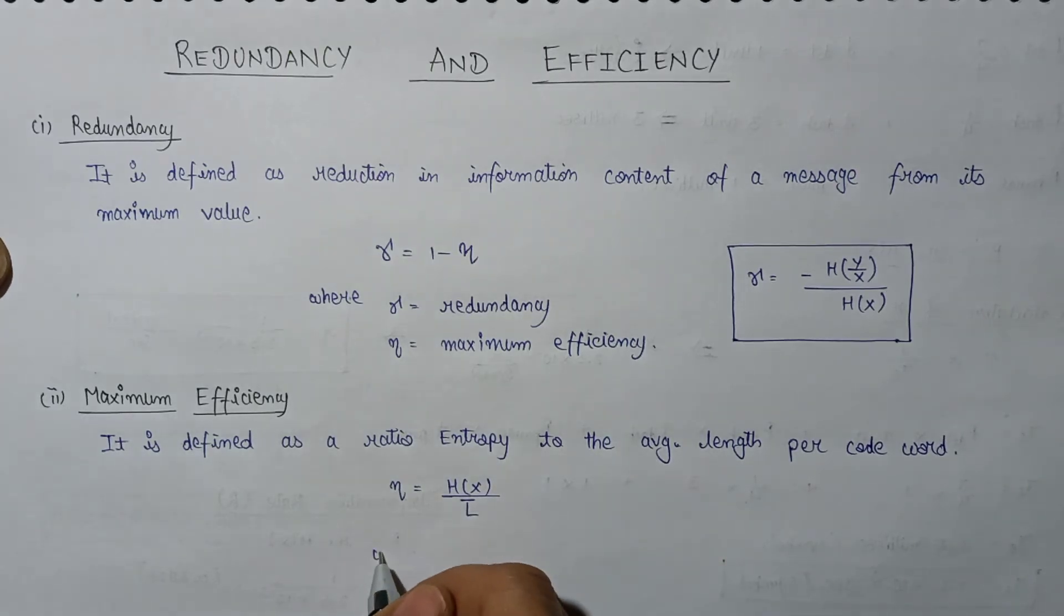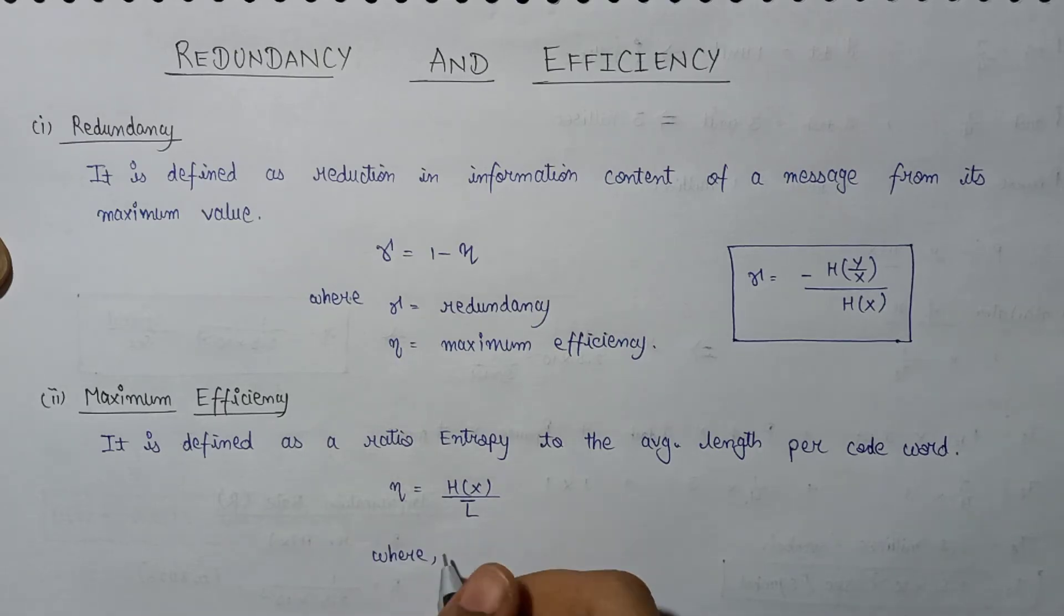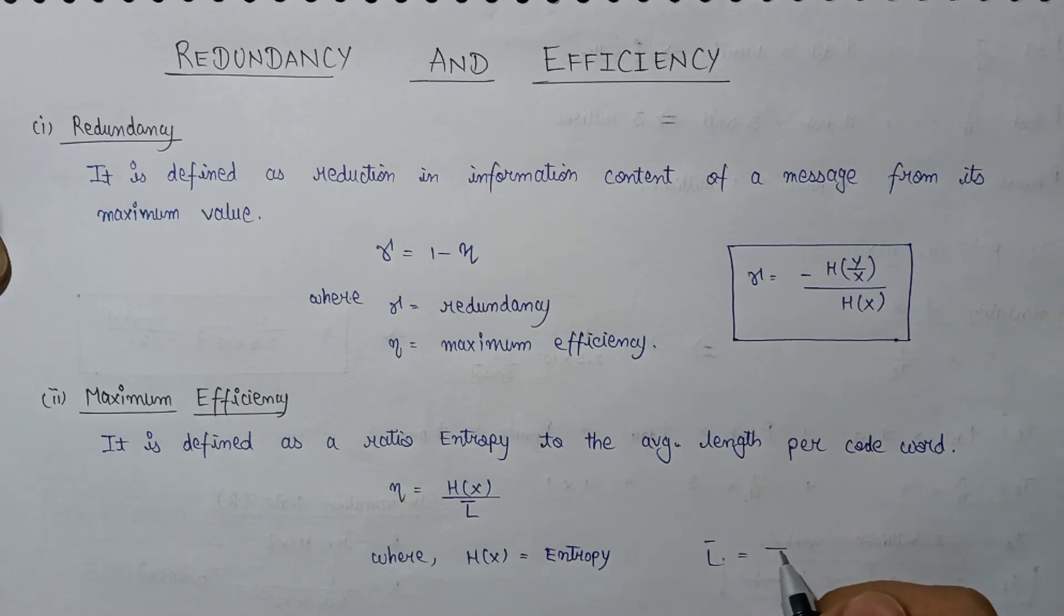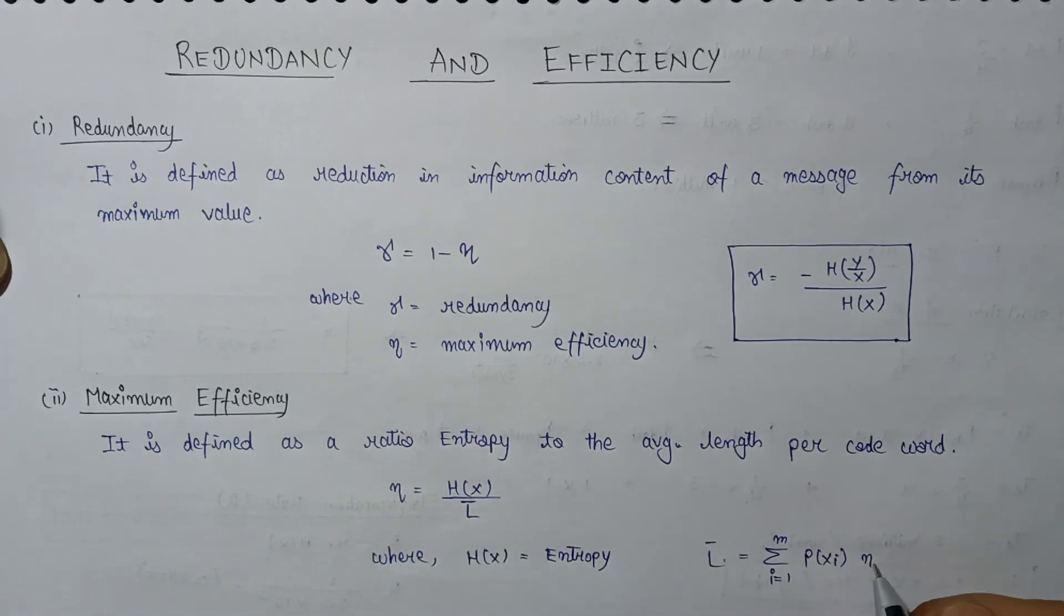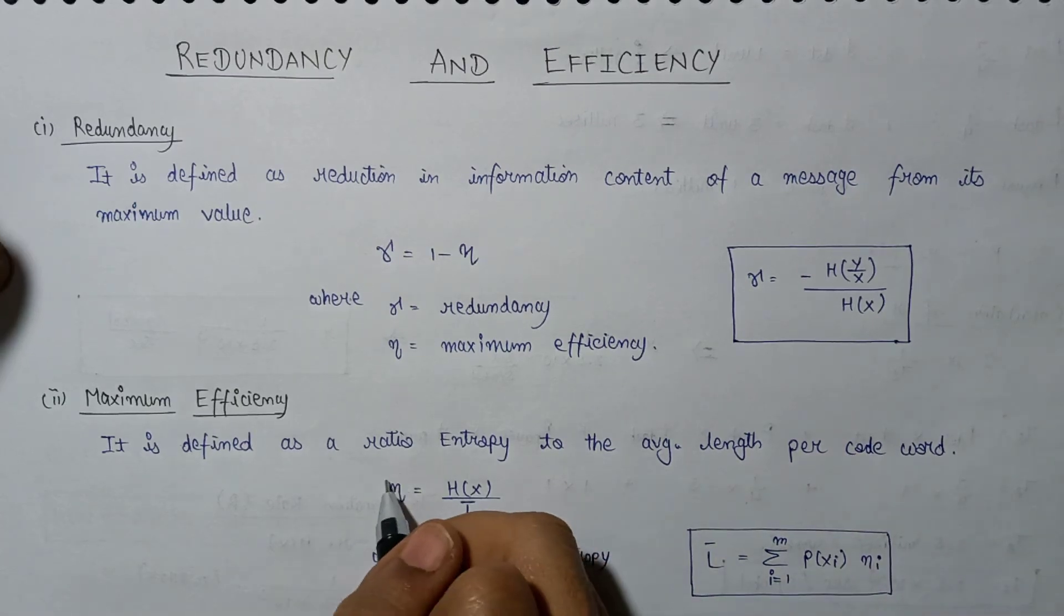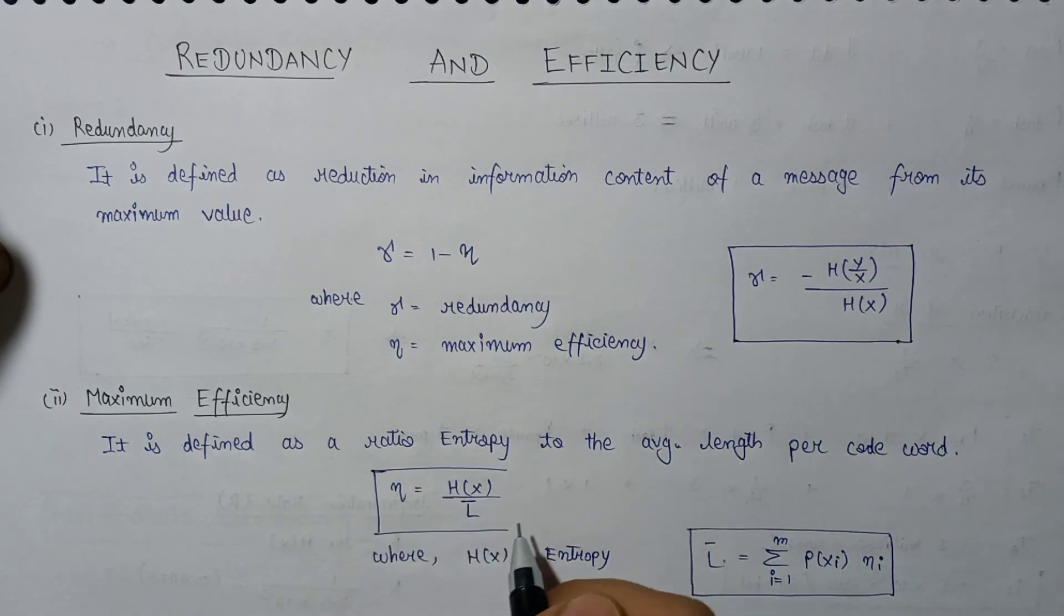Here H of X represents the entropy, the average information. And L bar is the summation, i ranges from one to M, P of Xi into ni. So this is the formula for the calculation of L bar, and this is the mathematical expression of maximum efficiency.